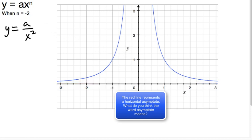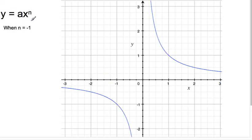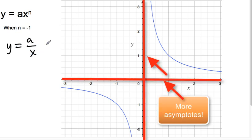The last one we're going to look at is when n equals negative 1. So this is y equals a over x. So dividing by that x value gives you a graph that looks like this.